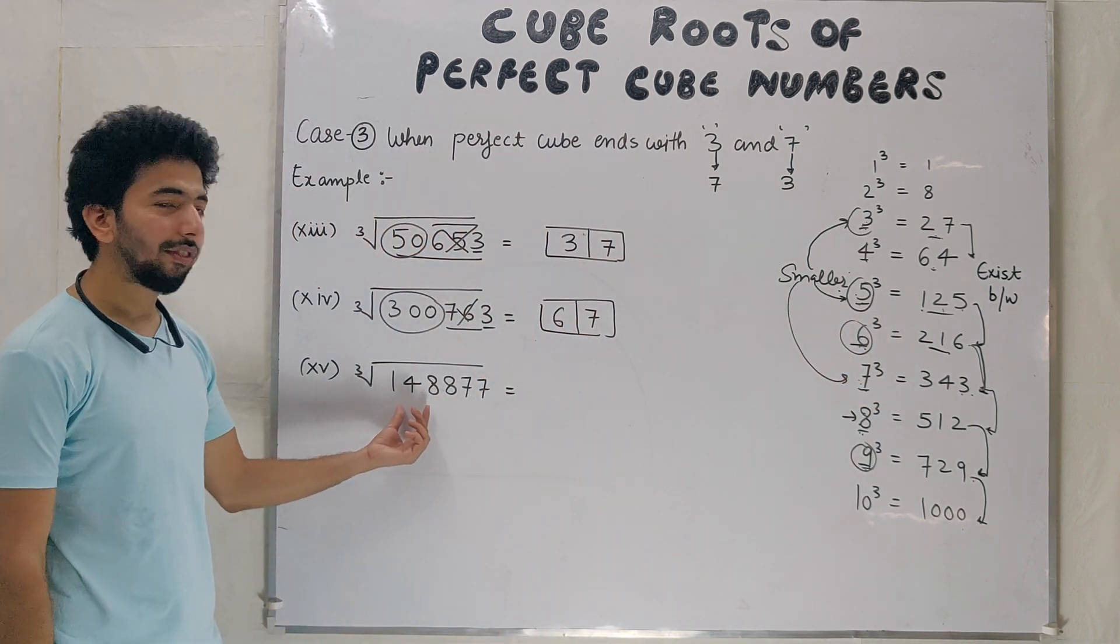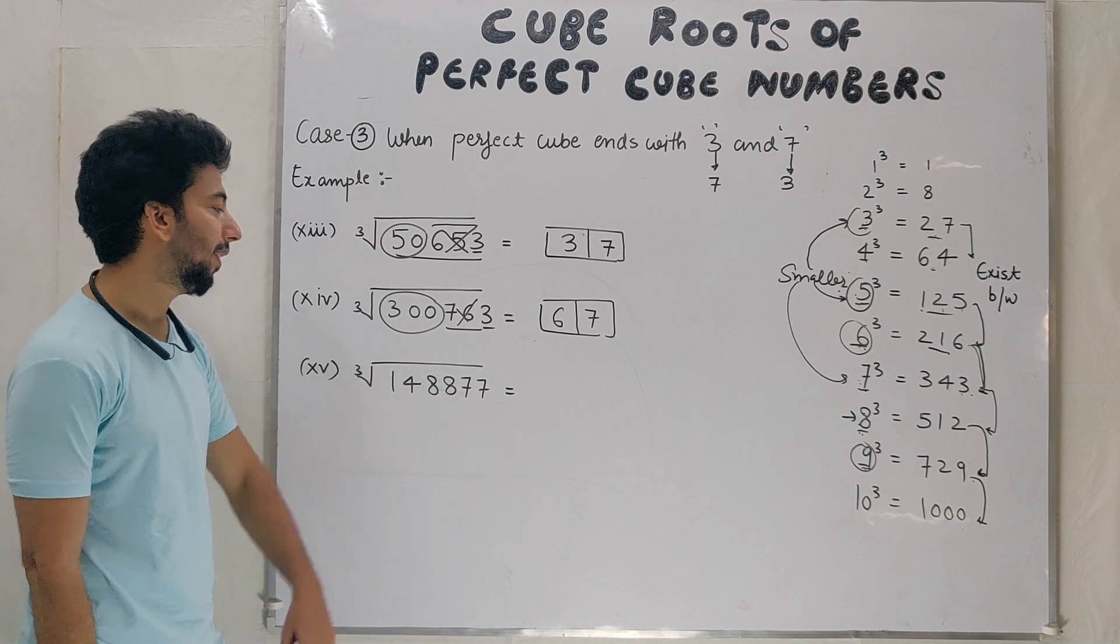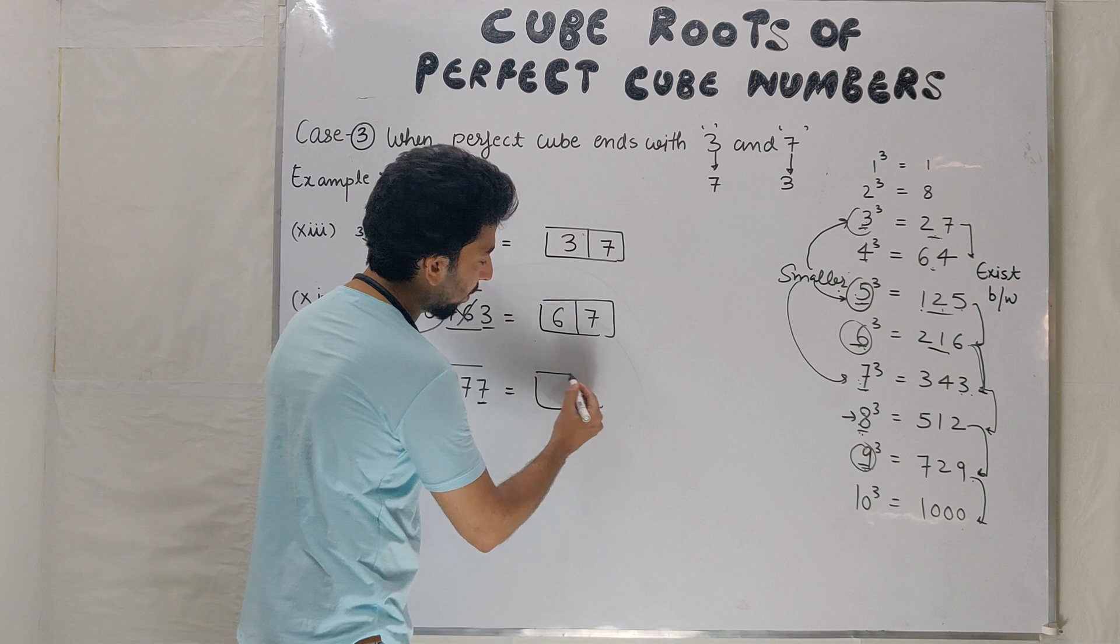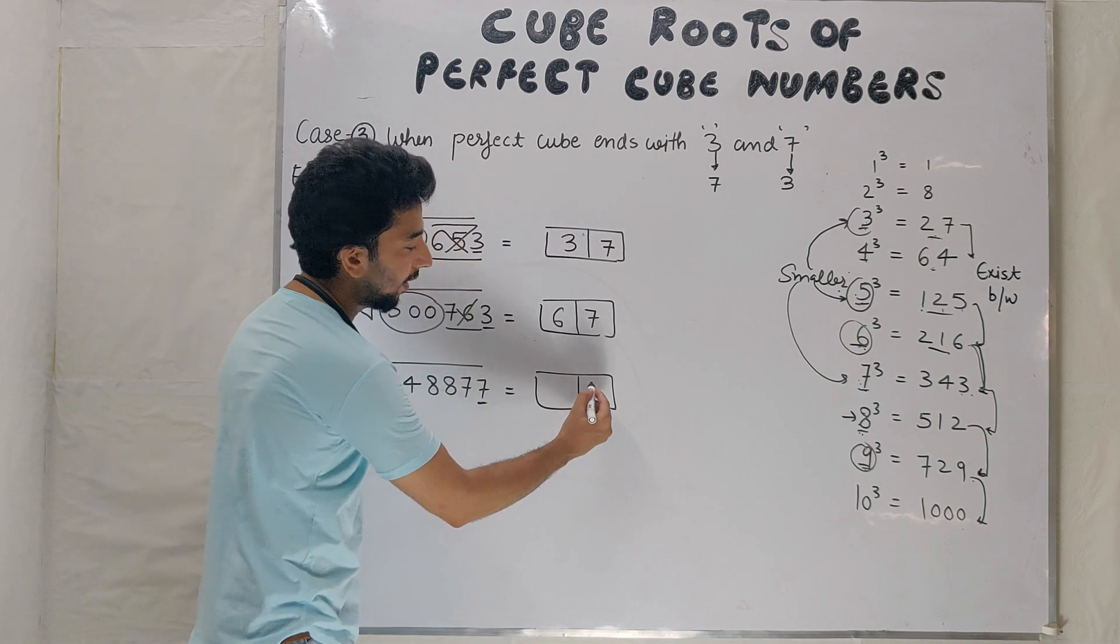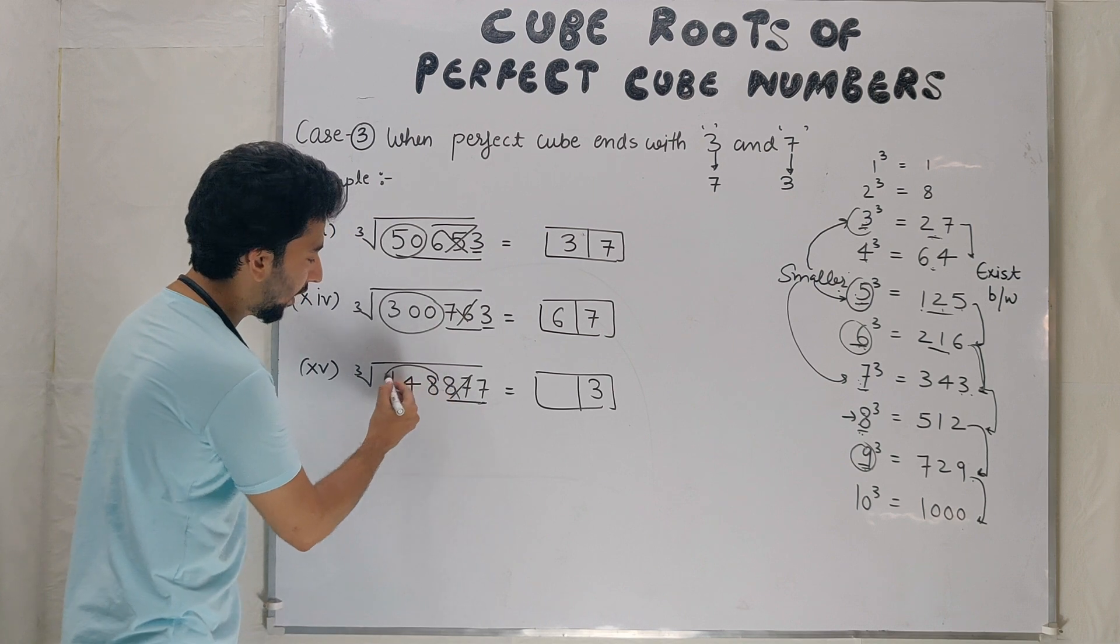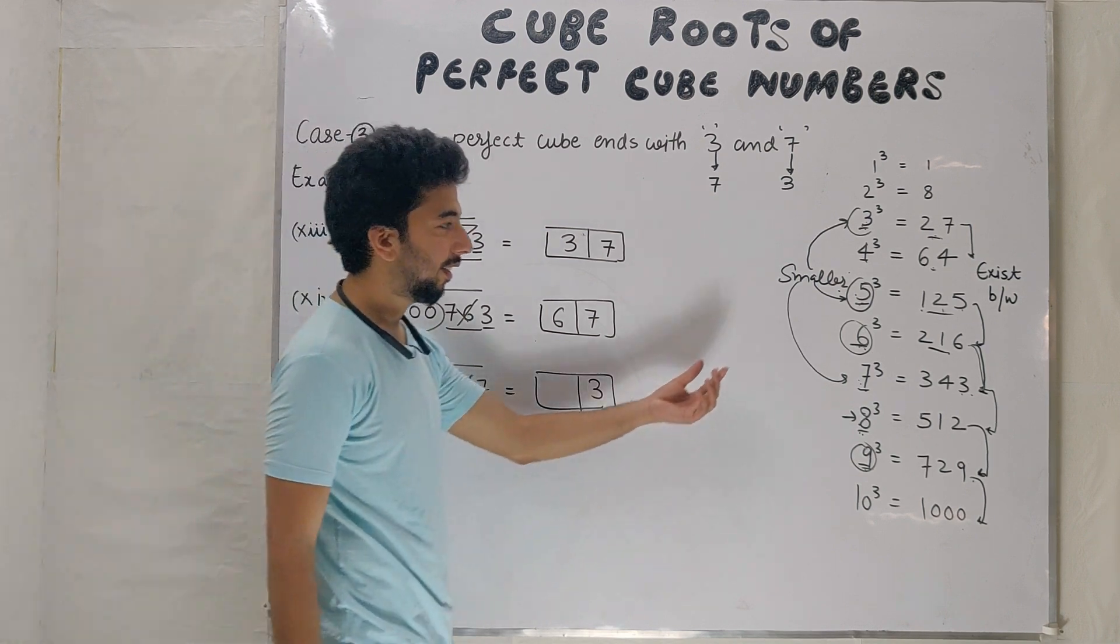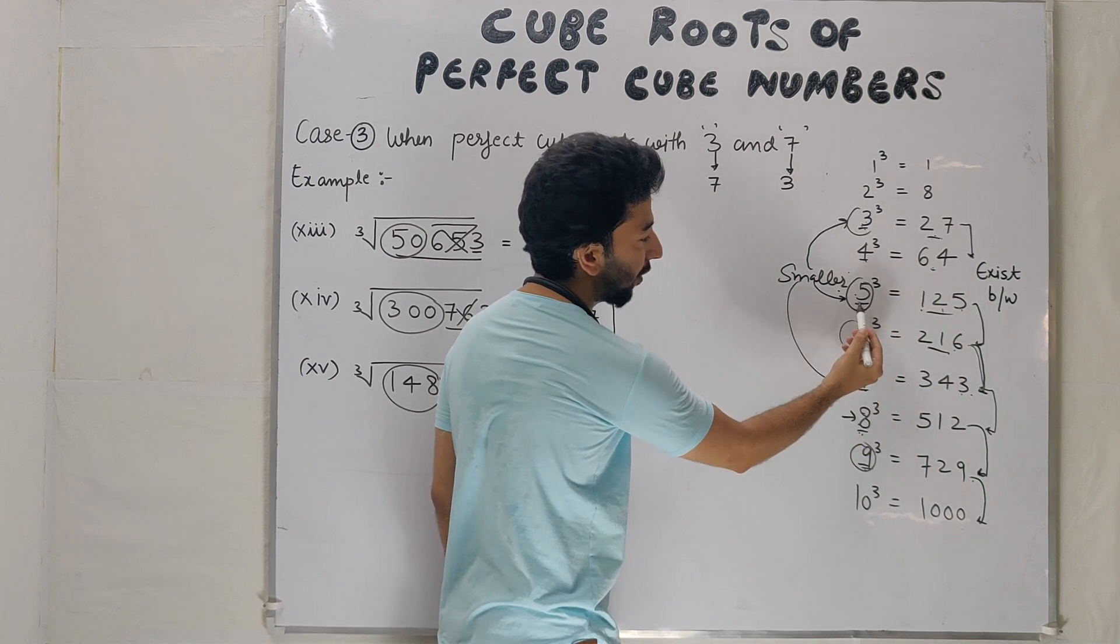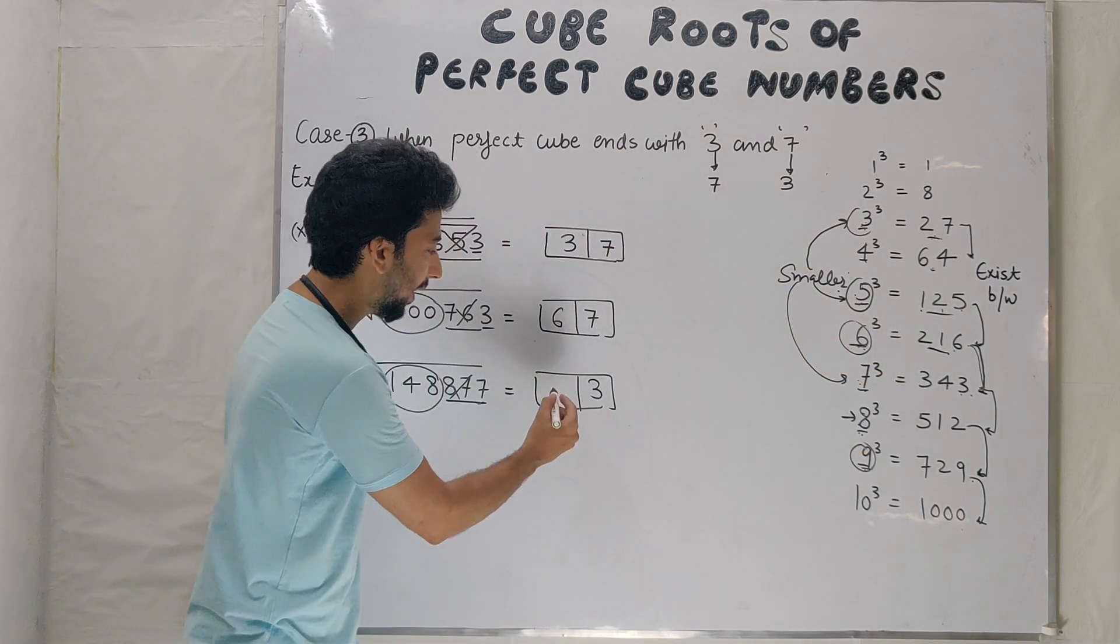Last example: 148877. Ends with 7, cube root unit place 3. Cancel, 148. Between 125 and 216, smaller one is 5, so 53.